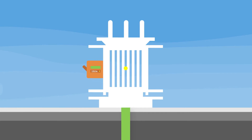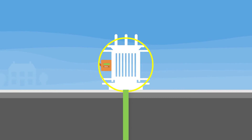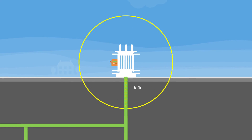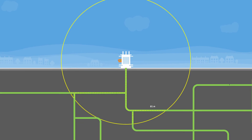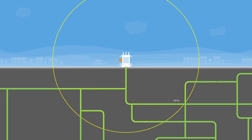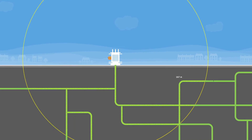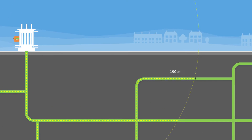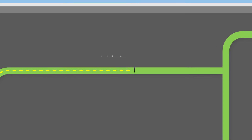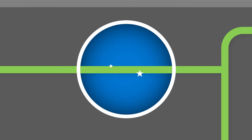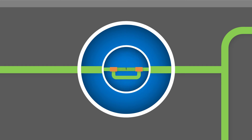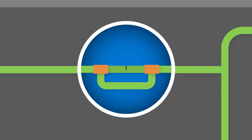Transient faults can be hard to find on underground cables, and we need to know which part of the cable to dig up and repair. This technology helps us locate the fault, diagnose the problem, and repair, replace, or bypass the faulty cable with minimal loss of power to you.